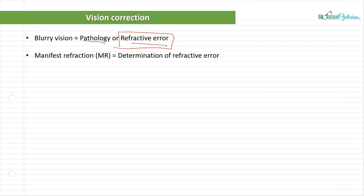Manifest refraction — MR — is the determination of refractive error. When the patient goes for an eye exam, the optometrist or ophthalmologist performs a series of tests. Another big part is the manifest refraction, where the person sits behind the phoropter — the machine with a whole bunch of lenses in it. That series of lenses is used to determine the amount of refractive error and the amount of power required to correct vision.